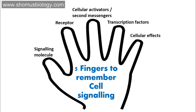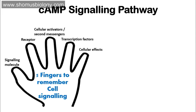Now let's begin with the very first example: the cyclic AMP signaling pathway, also called the GPCR pathway or G protein-coupled receptor pathway. There are many names for it, so let's begin to talk about the cAMP pathway.